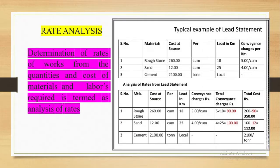Next, rate analysis. Determination of rates of work from the quantities and the cost of materials and the labors required is termed as analysis of rates. When the tender is given by the client to the contractor, then contractor contacts the QS. He hires a quantity surveyor and the quantity surveyor does this job. He does the rate analysis and finds the good way to bid on tender. Here's a typical example of rate analysis where you see rough stone and your cost per cubic meter. And this is the rate analysis of different materials.